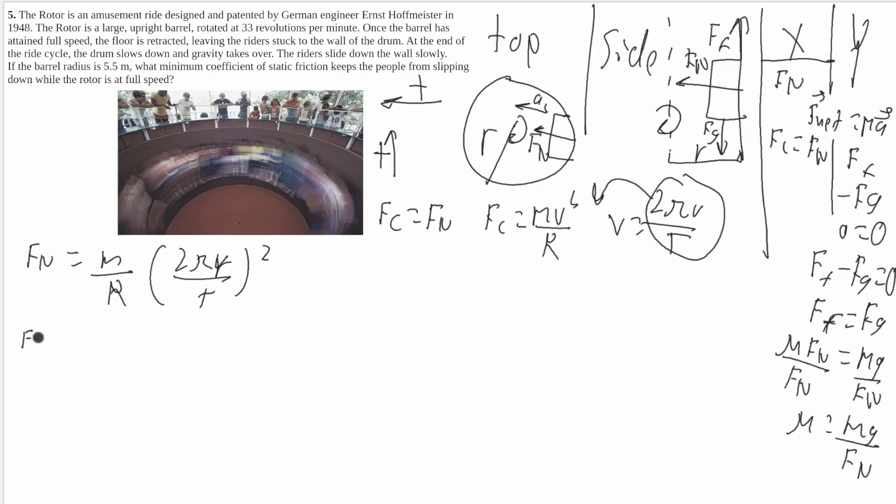So the normal force will be m over r times 4 pi squared r squared over t squared. One of these r's will cancel. Maybe that's with r there. So the normal force will be equal to 4 pi squared m r over t squared, which is just a really big, long, ugly thing. This can't be simplified anymore.